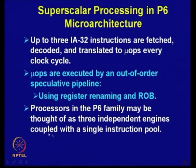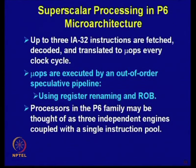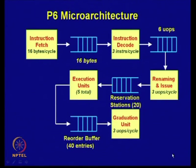Processors in the Pentium 6 family may be thought of as three independent engines coupled with a single instruction pool. Instructions are fetched and kept in an instruction buffer, from which instructions go to the execution units. Three independent execution units execute in parallel. The instruction fetch unit fetches 16 bytes every cycle, and those 16 bytes are stored in an instruction queue.